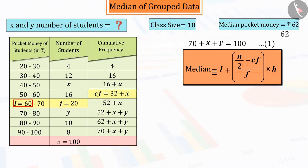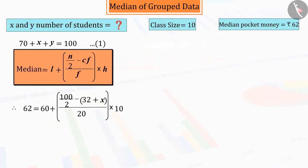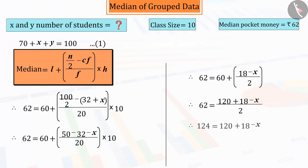Putting all these values in the median formula, we get 14 as the value of x. Since we have to find the number of students x and y, can you tell the value of y?